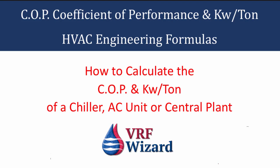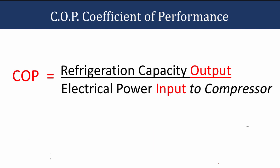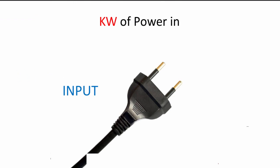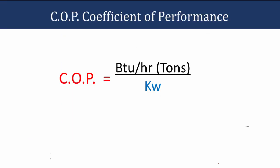Welcome to the VRF Wizard. We're going to go over how to calculate COP and KW per ton for a chiller or a central plant. The COP is the refrigeration capacity output over the electrical power input — so how much power we have to input in order to produce a ton of cooling as our output. The COP is BTUs per hour of tons over the power, which is the kilowatts of input power.